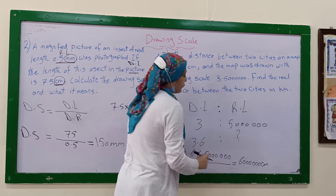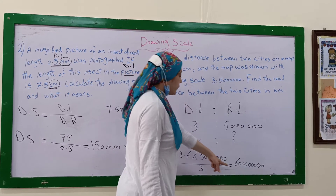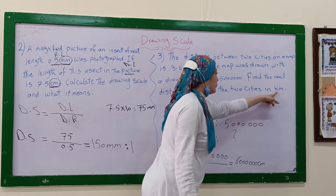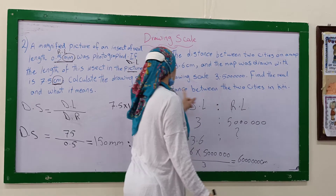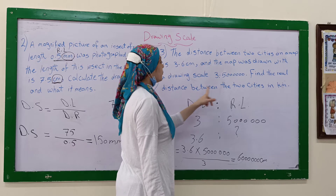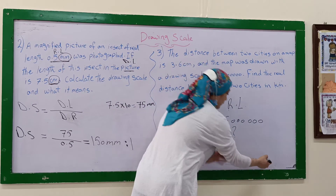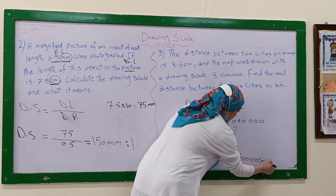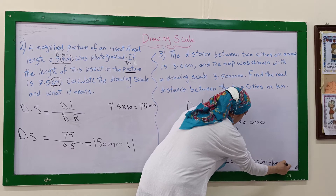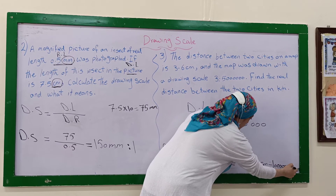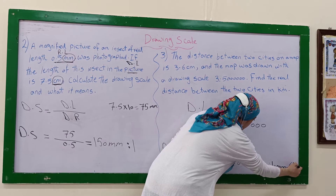To convert 6,000,000 centimeters to kilometers, we divide by 100,000, giving us 60 kilometers. So the real distance between the two cities is 60 kilometers.